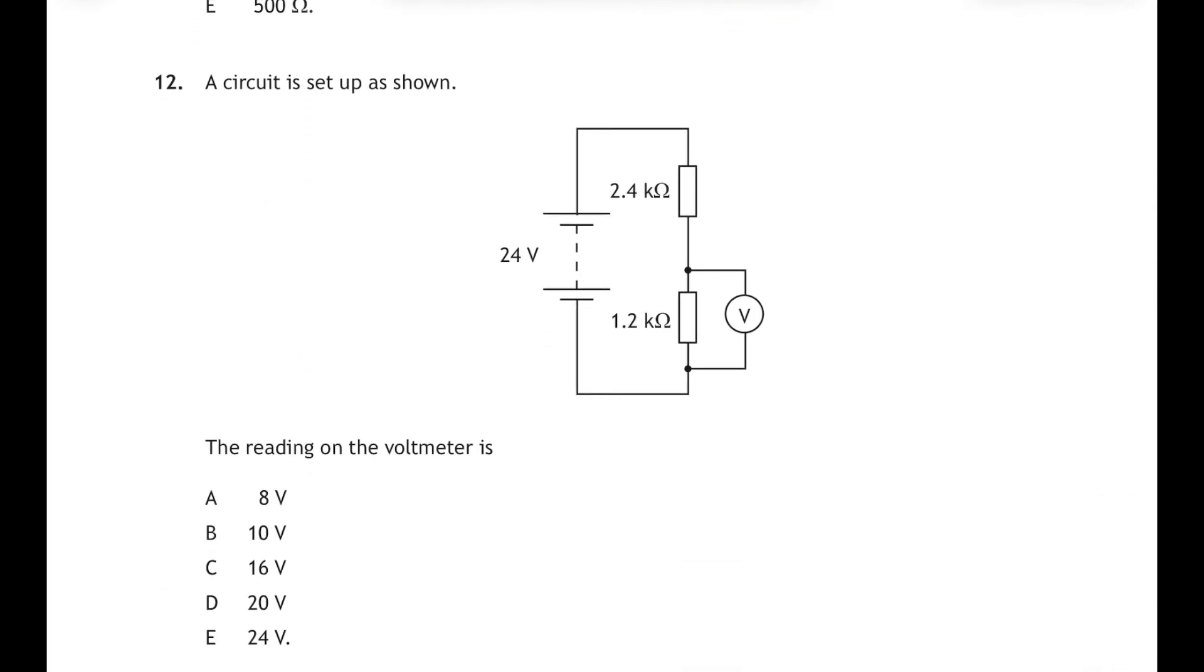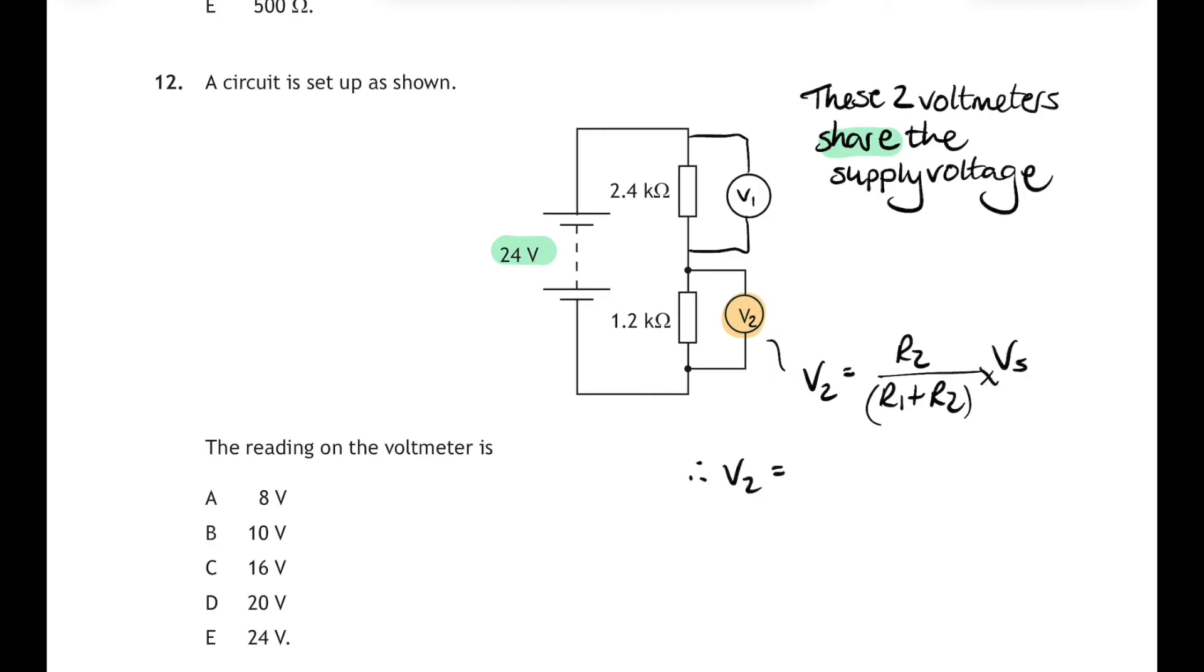Question 12 is a voltage divider circuit, and we have to work out the voltmeter reading. I always add another voltmeter on to these diagrams just because these two voltmeters will share the supply voltage. So both of them together will always add up to 24, and we have to work out the bottom one. Now you've got a relationship on your relationship sheet that allows you to do that. It's V2 equals R2 over R1 plus R2 times the supply voltage. So if we sub in everything there, R2 is 1.2 over the two resistors added together, that's 1.2 plus 2.4, that should be times the supply voltage, which was 24 volts. And if you do that in your calculator, you'll get an answer of V2 is equal to 8 volts.